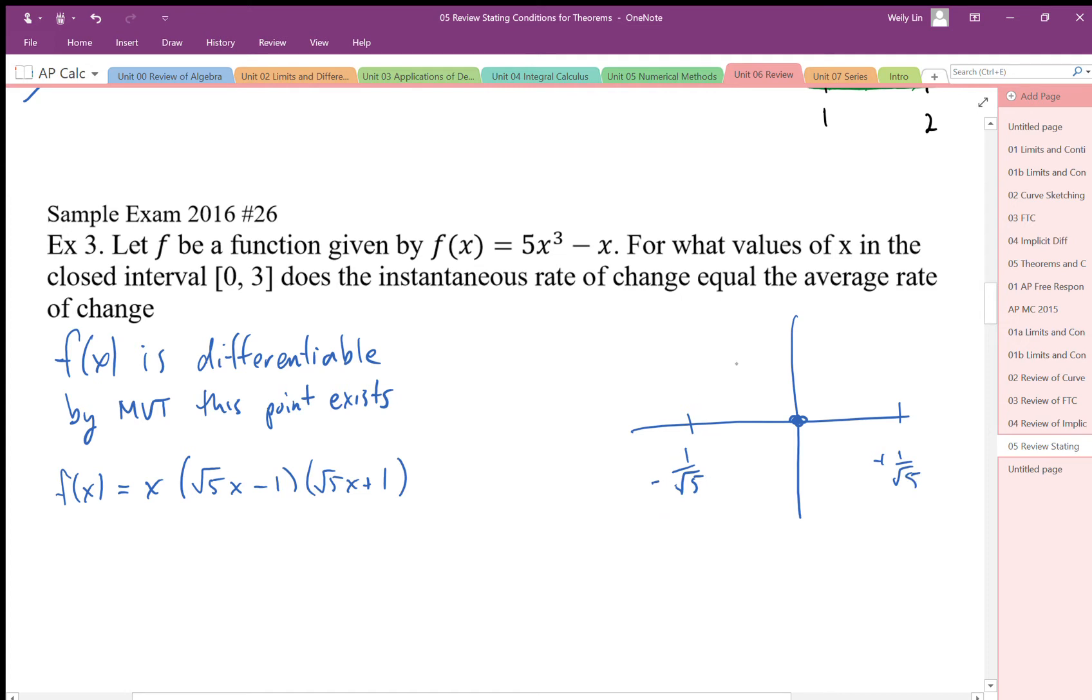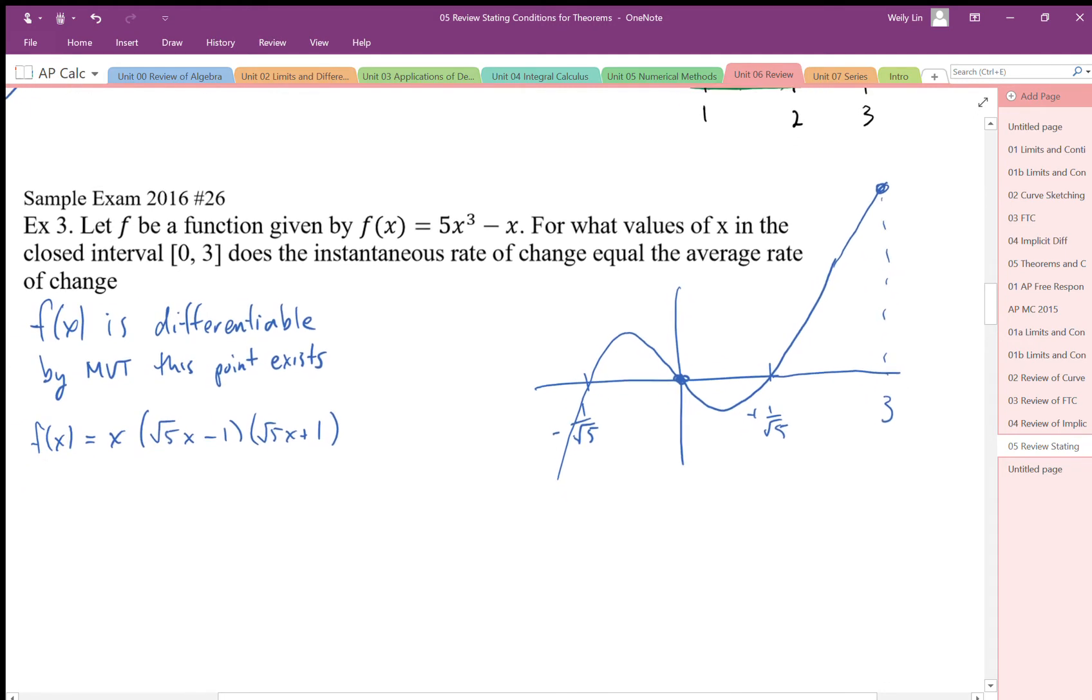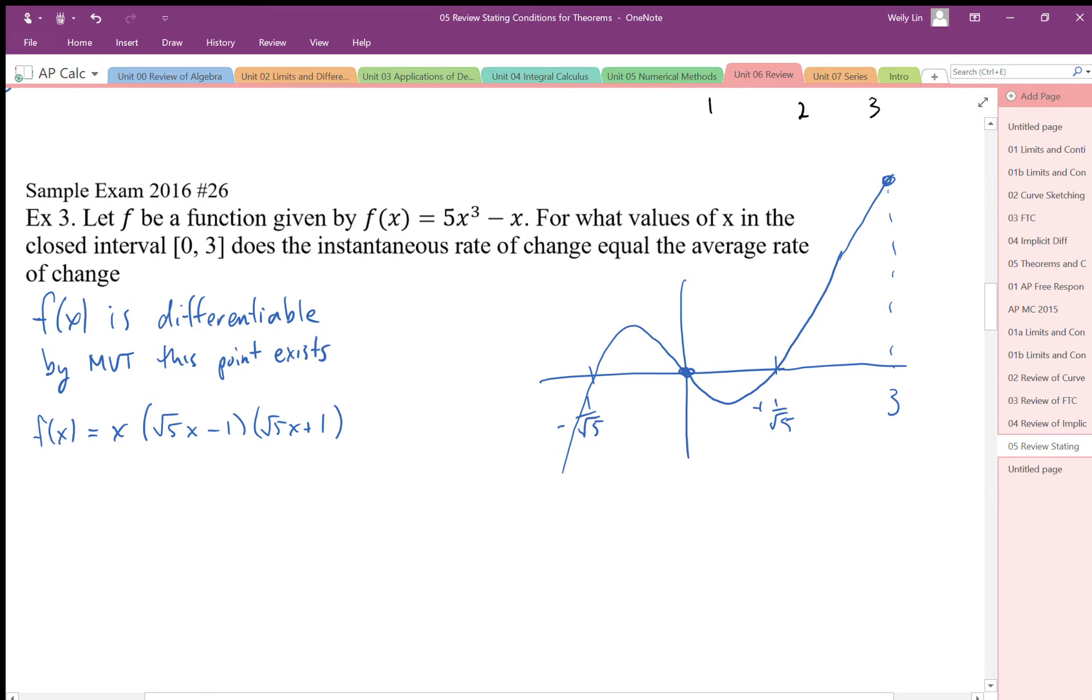So the graph is going to look something like this. I'm just going to go off here. The scale is not quite right but okay. So we're looking in the interval zero to three. We want to know where the instantaneous rate of change is equal to the average rate of change.